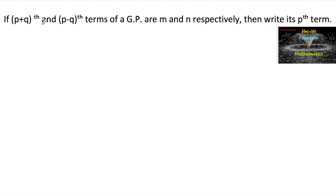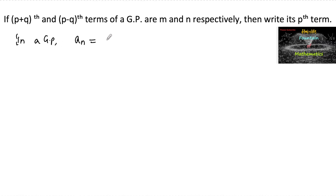If the (p+q)-th term and (p-q)-th term of a GP are m and n respectively, then write its p-th term. In a GP, the general term is given by a_n = a · r^(n-1), where a is the first term and r is the common ratio.